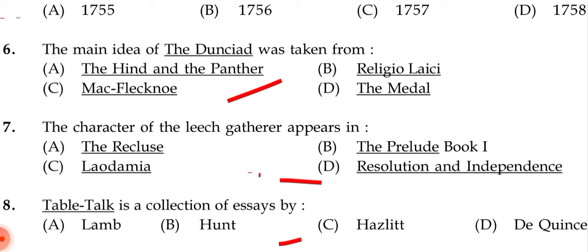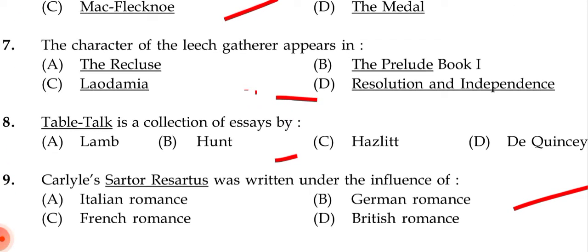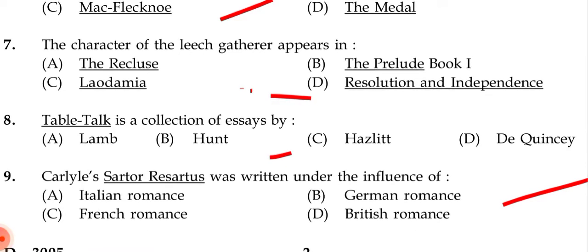Next question: The character of the leech-gatherer appears in — (a) The Recluse, (b) The Prelude Book One, (c) Laodamia, (d) Resolution and Independence. The correct answer is (d) Resolution and Independence.